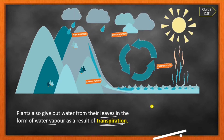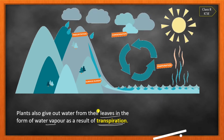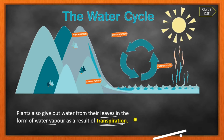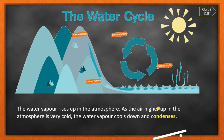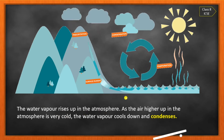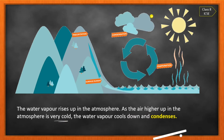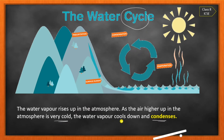Evaporation means the liquid water that was on the surface goes into vapour state and goes into the atmosphere. Next, the water vapours rise up in the atmosphere and accumulate higher up — as air rises higher in the atmosphere, heavy clouds are formed from these water vapours.